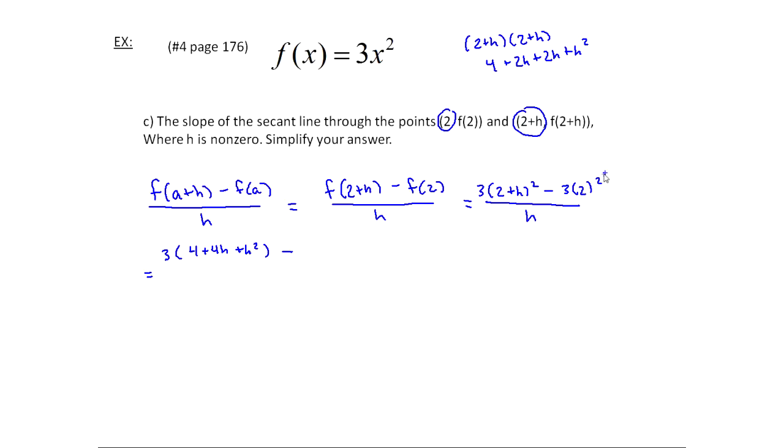So now I squared that, and then minus, and then this is 4 times 3, so this would be minus 12. All over h. Right now, next thing I'm going to do is go ahead and distribute this 3 and see what comes out. So 3 times 4 is 12, and then 3 times 4 again is 12h, because we have h there, and then plus 3h². And then minus 12, and then over h. Notice that we have a positive 12 and a minus 12, right? So those are gone.